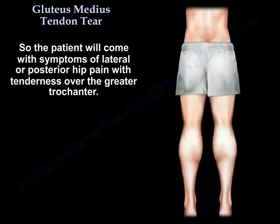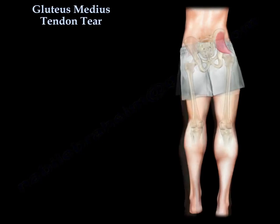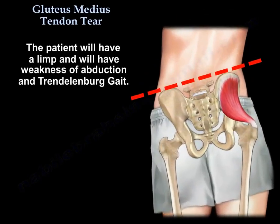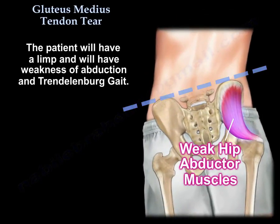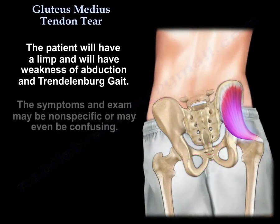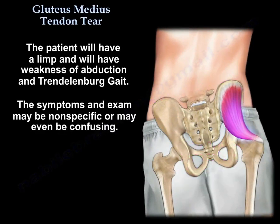The patient will come with symptoms of lateral or posterior hip pain, with tenderness over the greater trochanter. Patient will have a limp and will have weakness of abduction and Trendelenburg gait. The symptoms and exam may be non-specific, or it may be even confusing.